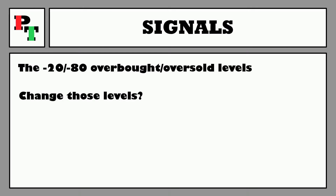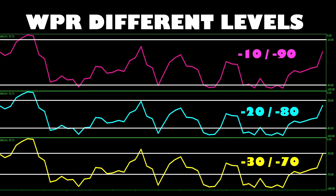What if we change those levels? We've got three different Williams Percent Range oscillators with varied overbought/oversold levels applied to the same price action. At the top in pink are the minus 10 and minus 90 levels — these give the fewest signals of the three, but they're likely to have a higher probability of an actual reversal coming to fruition. In the middle are the standard minus 20 and minus 80 levels, giving similar signals but with a couple more inconsistent crossover areas.